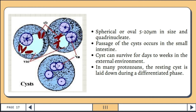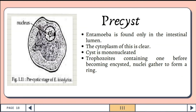There are four forms of cysts: the pre-cyst, the mature cyst, the immature cyst, and the young cyst. In the pre-cystic form, Entamoeba is found only in the intestinal lumen. The cytoplasm is clear and each cyst is mononucleated, meaning it only has a single nucleus. The trophozoites can contain only one nucleus before becoming encysted, with nuclei gathered to form a ring.